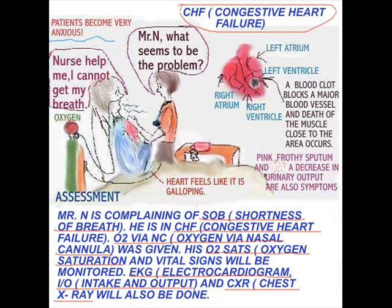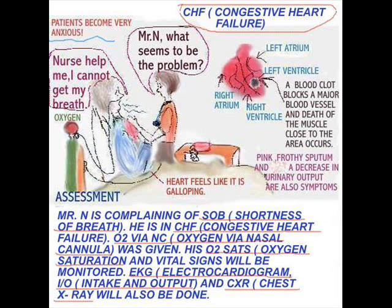Here's the full scenario: The patient says, 'Hey nurse, help me. I cannot get my breath.' The nurse asks what seems to be the problem. Mr. N is complaining of SOB — shortness of breath. He is in CHF — congestive heart failure. O2 via NC — oxygen via nasal cannula — was given. His O2 sats — oxygen saturation — and vital signs will be monitored. EKG — electrocardiogram — I&O — intake and output — and CXR — chest x-ray — will also be done.